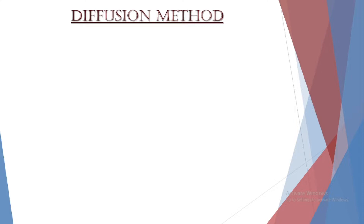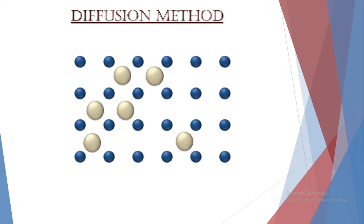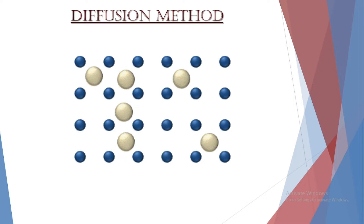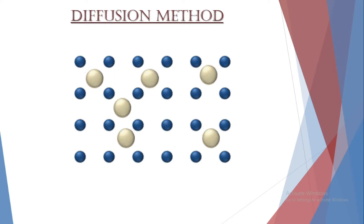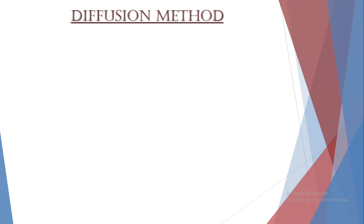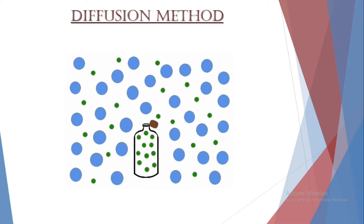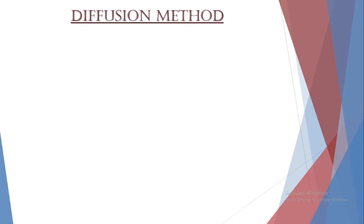Diffusion means the movement of charges which takes place to bring the system under equilibrium condition from a non-equilibrium condition. Generally, we say flow or movement of charges takes place from higher concentration to lower concentration. In the diffusion method, an impurity element is added to the semiconductor which gets diffused at a certain temperature.